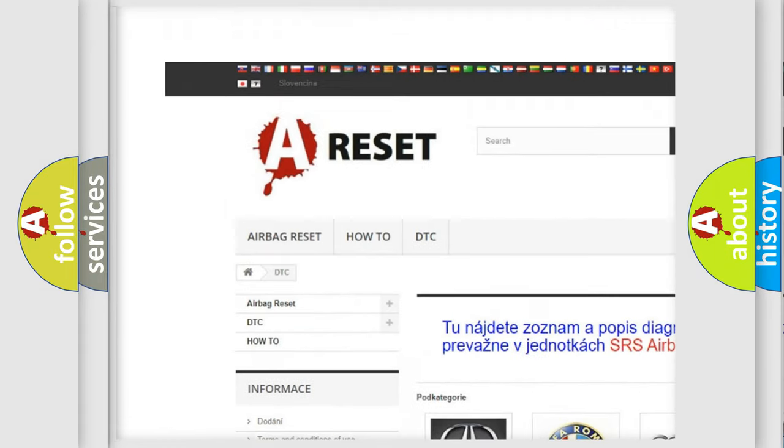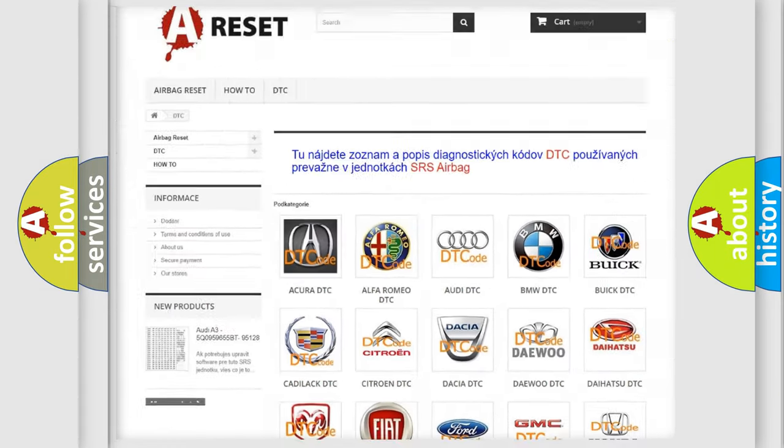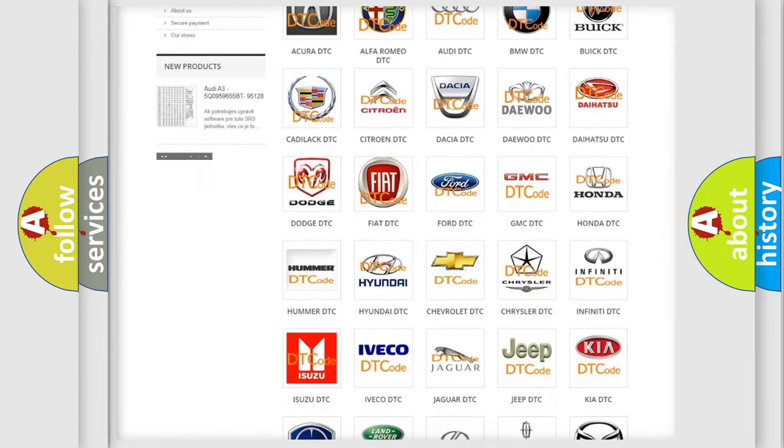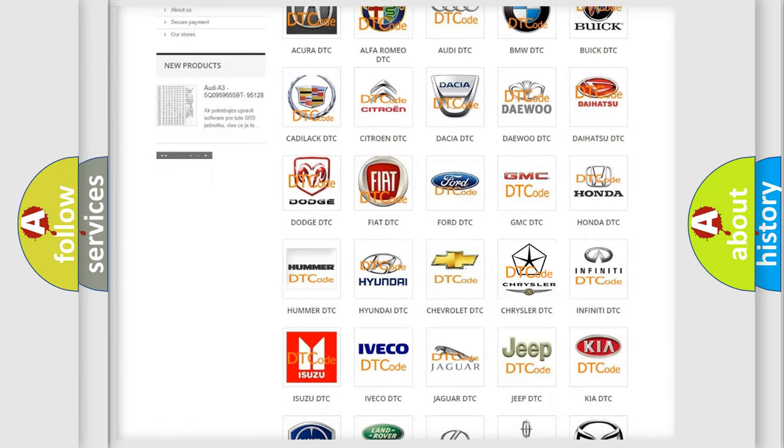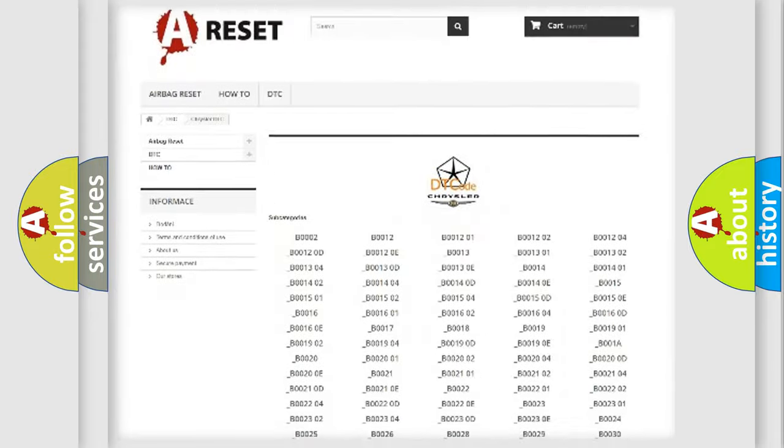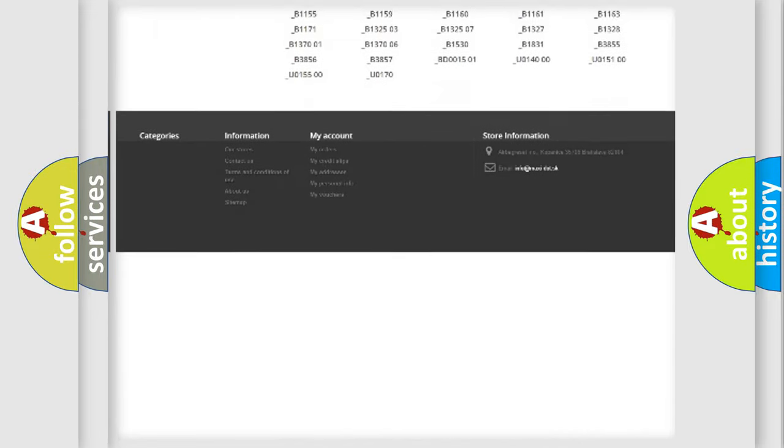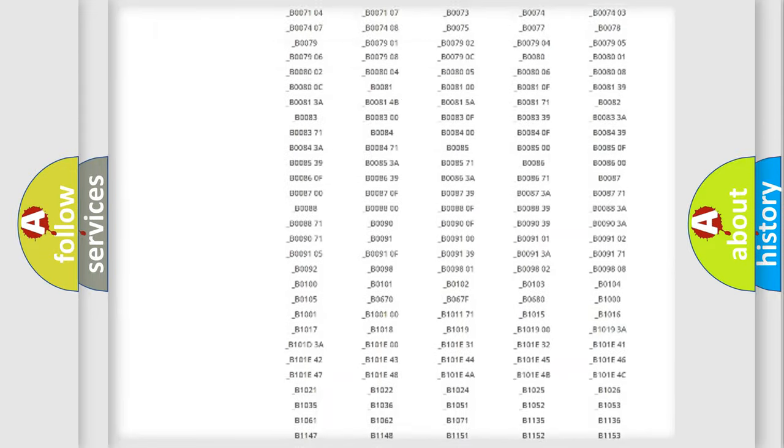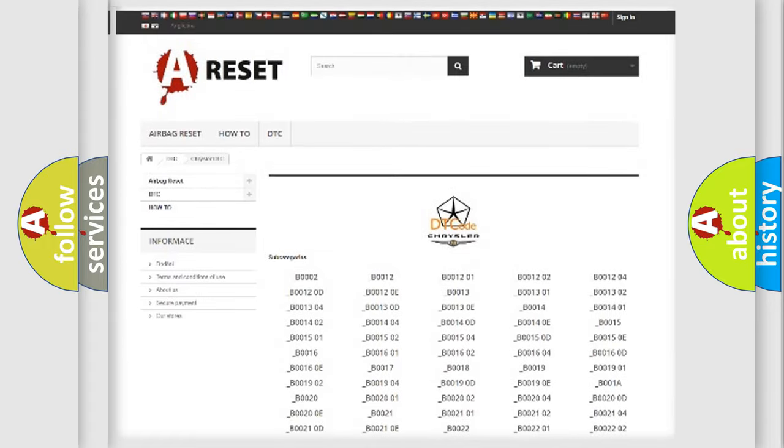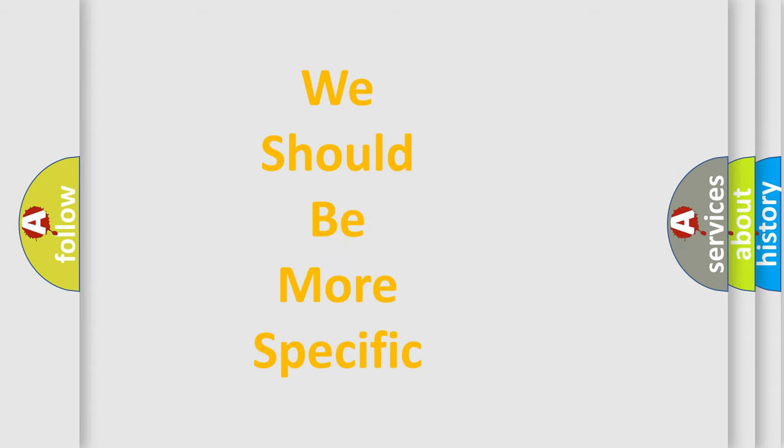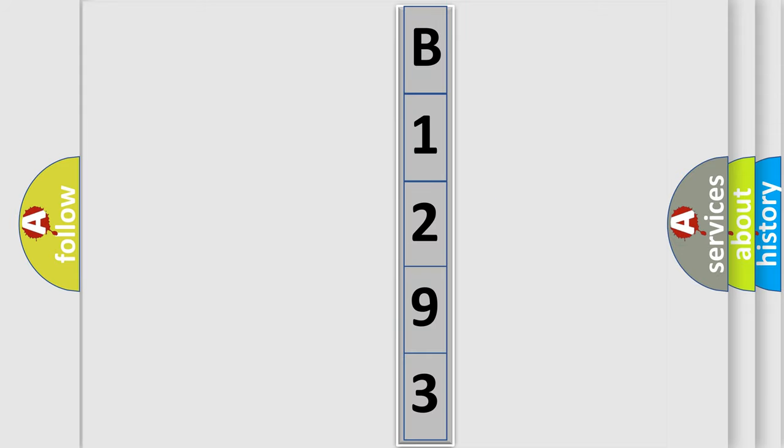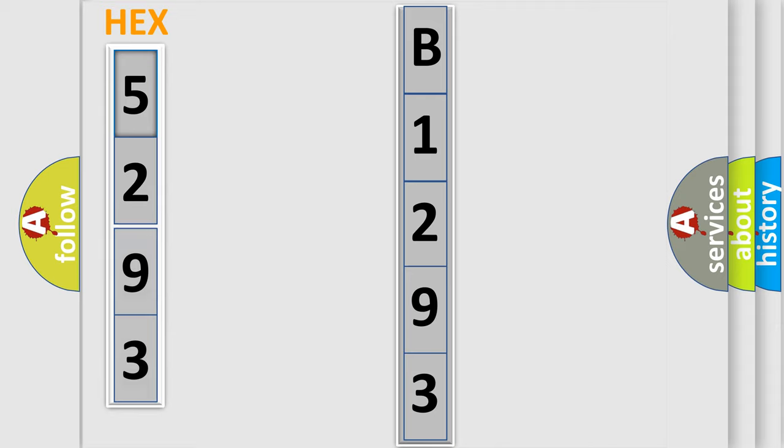Our website airbagreset.sk produces useful videos for you. You do not have to go through the OBD2 protocol anymore to know how to troubleshoot any car breakdown. You will find all the diagnostic codes that can be diagnosed in Chrysler vehicles, and many other useful things.